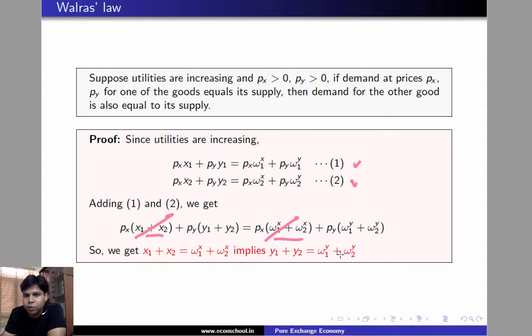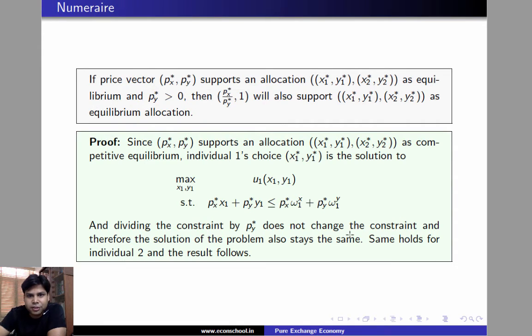This is Walras' Law. The next result is that if price vector PX star, PY star supports this allocation as equilibrium and PY star is positive, then dividing the price vector by PY star will not change anything. The revised price vector will also support the same allocation as competitive equilibrium allocation.